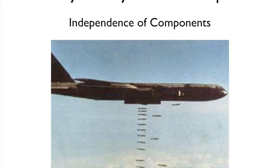In this example, you can see the bombs staying right underneath the airplane. So the fact that the bombs are falling vertically does not affect their forward horizontal speed.